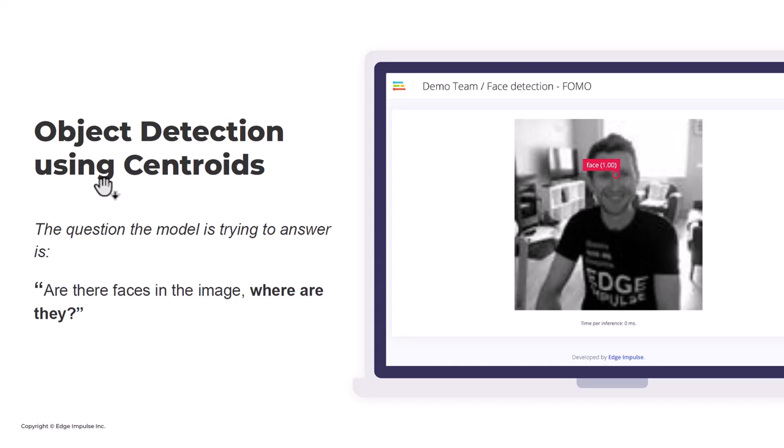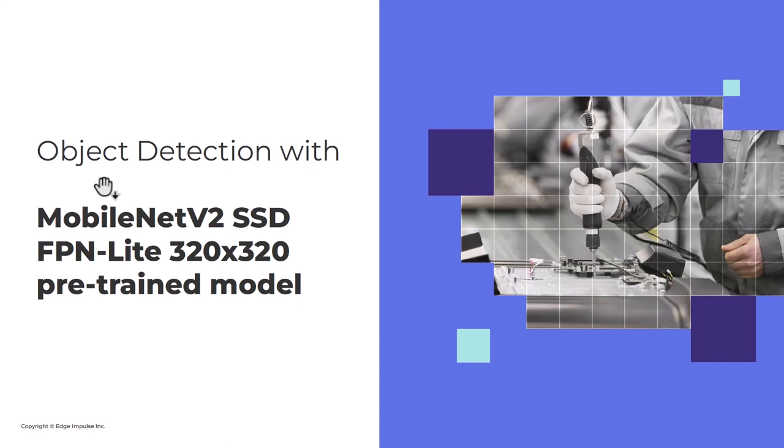Matt Kelsey, one of our researchers who's been in the machine learning field for about 20 years, came up with an idea: we can simplify the way we do object detection just by using centroids. We lose one important dimension — the size of the objects — but the question the model answers is: are the faces in the image and where are they? We noticed with our users and customers that the size of the object is not always important in a use case, and sometimes the size constraint of the model is more important.